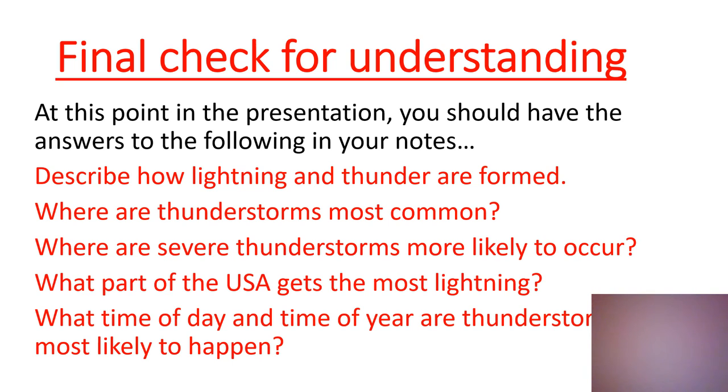Your final check for understanding should cover these data points: how lightning and thunder are formed, where thunderstorms are, where the severe ones are, where lightning happens, and the times of day and year that thunderstorms mostly occur. When you have completed your notes and have all of these checks for understanding, come see me for the notes quiz for today.